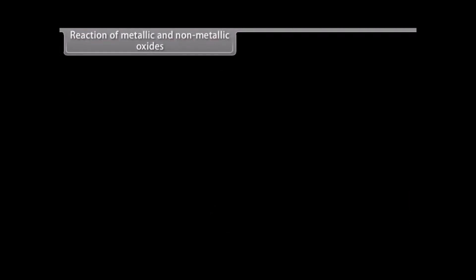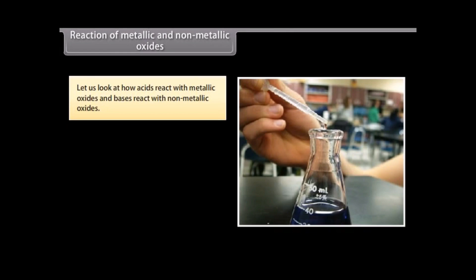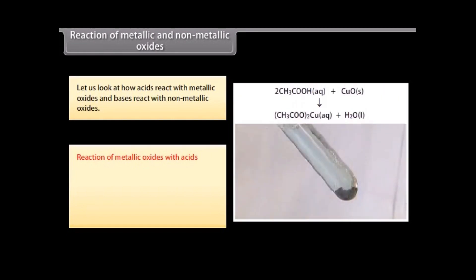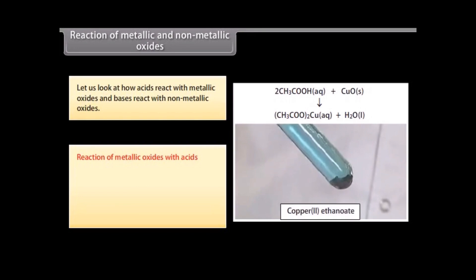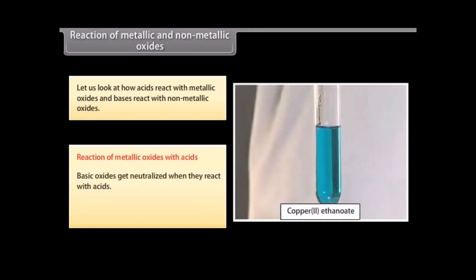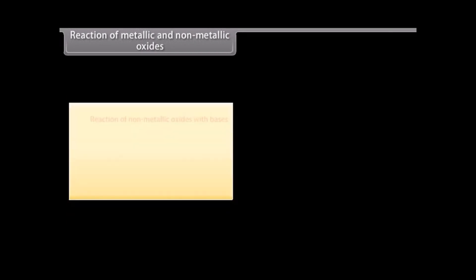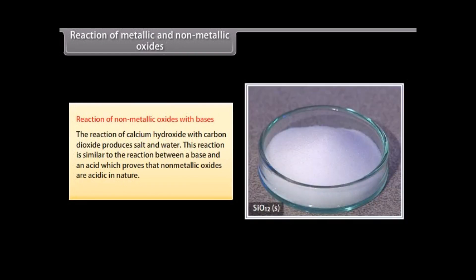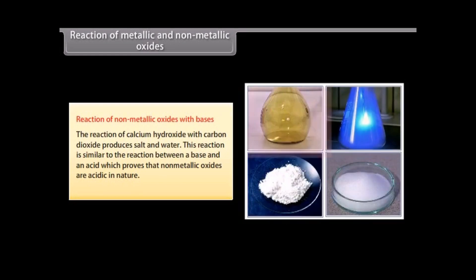Reaction of metallic and non-metallic oxides. Let us look at how acids react with metallic oxides and bases react with non-metallic oxides. Oxides that add hydroxyl ions to their molecules are called basic oxides. These oxides get neutralized when they react with acids. Reaction of calcium hydroxide with carbon dioxide produces salt and water, similar to the reaction between a base and an acid. This proves that non-metallic oxides are acidic in nature.